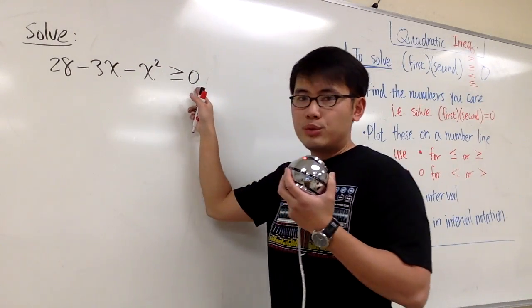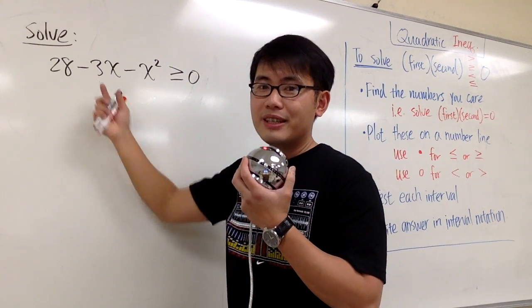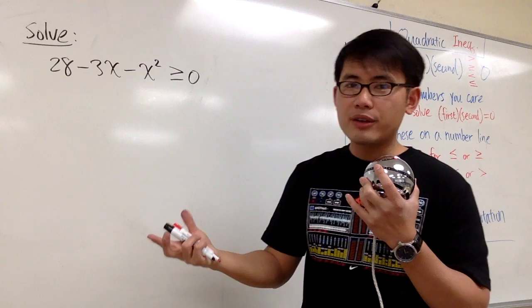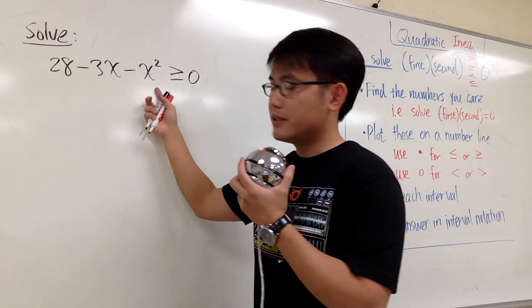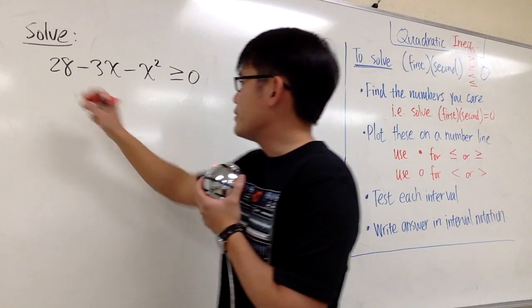First, we would like to solve this kind of quadratic inequality. Namely, I want to factor whatever I have on the left-hand side, and on the right-hand side I want to have 0. On the right-hand side we have 0 already, that's good. But on the left-hand side, this is not being factored.